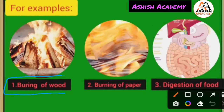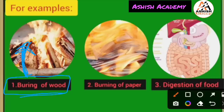First example of chemical change: burning of wood — lakdi ka jalna. After burning, we get ashes (raakh) and carbon dioxide gas. We cannot get the wood back in its original form. So the reactant was wood, and after the chemical reaction — after burning — we get carbon dioxide gas and ashes. So this is a chemical change, and energy is released.